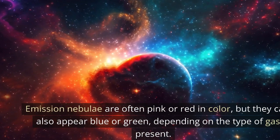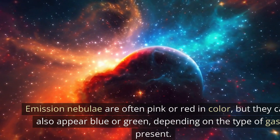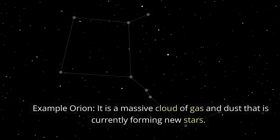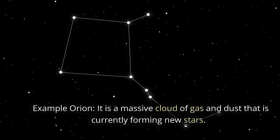Emission nebulae are often pink or red in color, but they can also appear blue or green, depending on the type of gas present. Example: Orion - It is a massive cloud of gas and dust that is currently forming new stars.